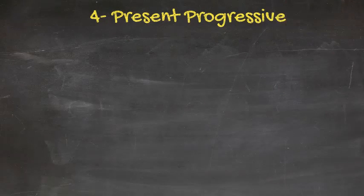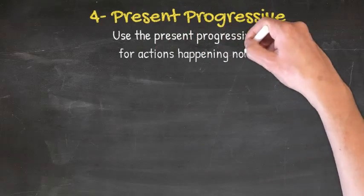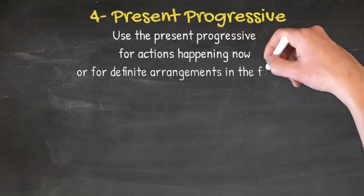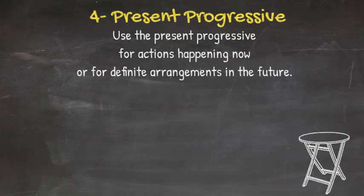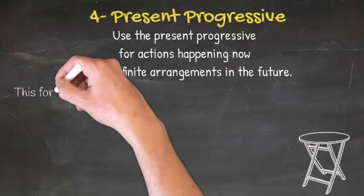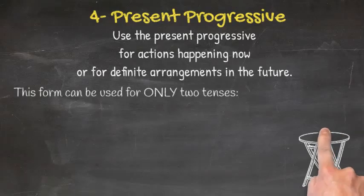The fourth part of our lesson today, present progressive. Use the present progressive for actions happening now, or for definite arrangement in the future. This form can be used for only two tenses.